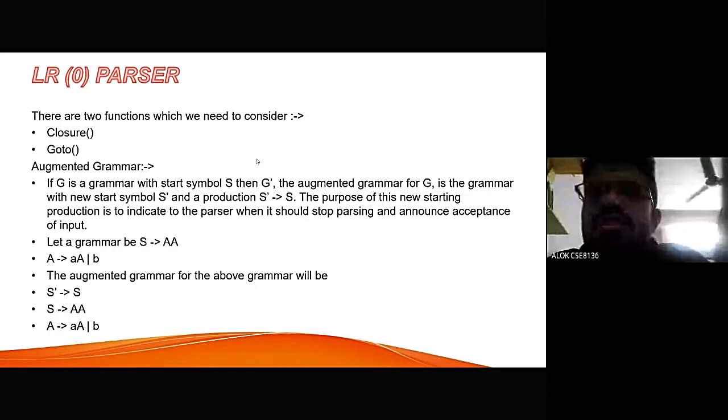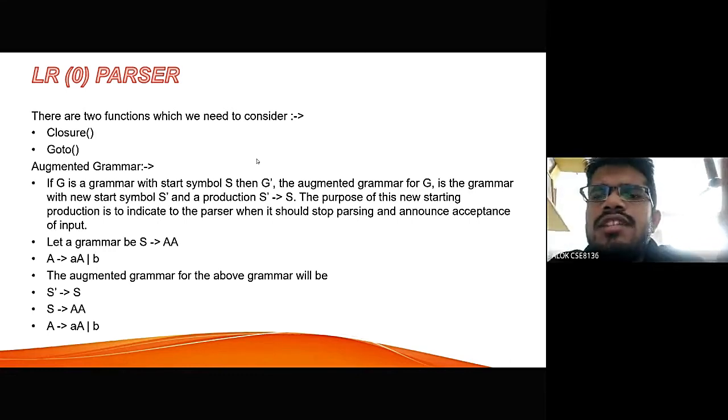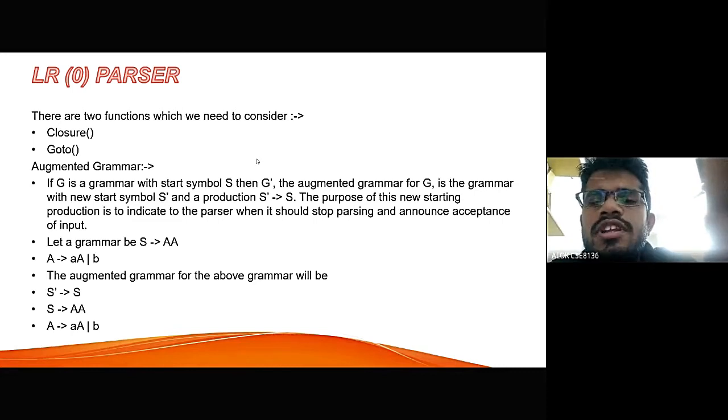In LR parser, the two important functions are closure function and goto function. And the most important, the most basic thing of LR parser is that for checking any string whether that belongs to LR parser or not, we need to augment the grammar given. So, if the start symbol of the grammar is S, we will augment it with the symbol S'. As we are given a grammar, S gives A, then A produces small a.